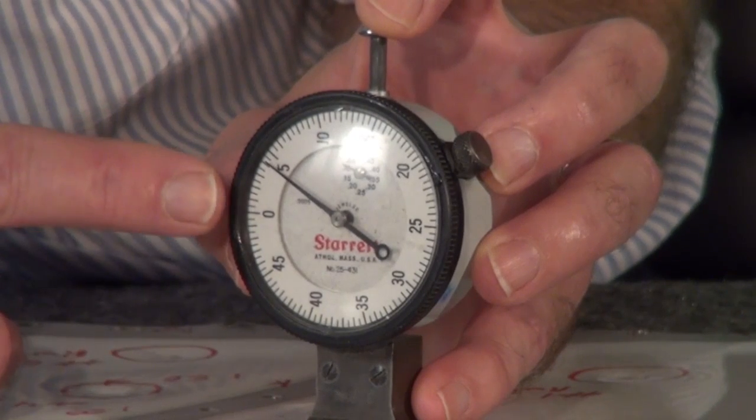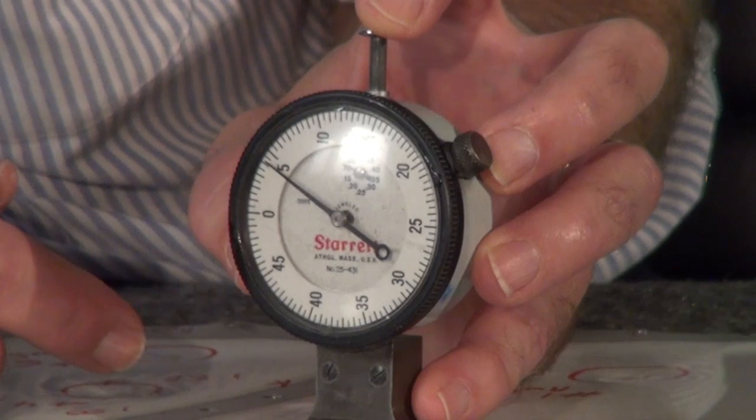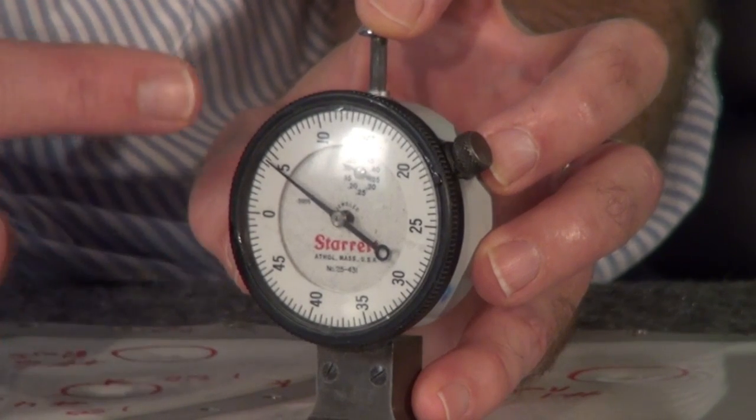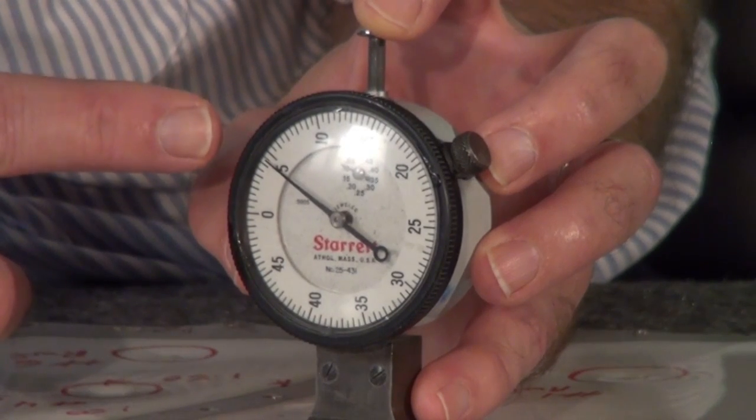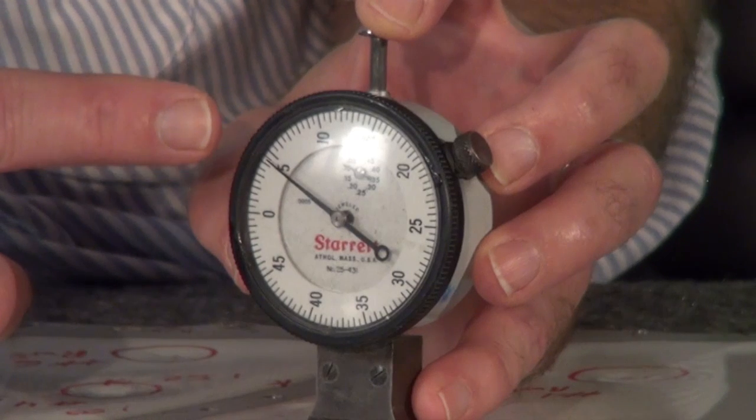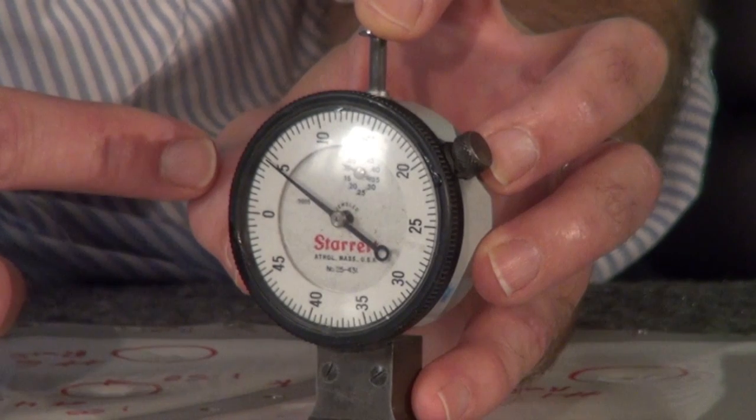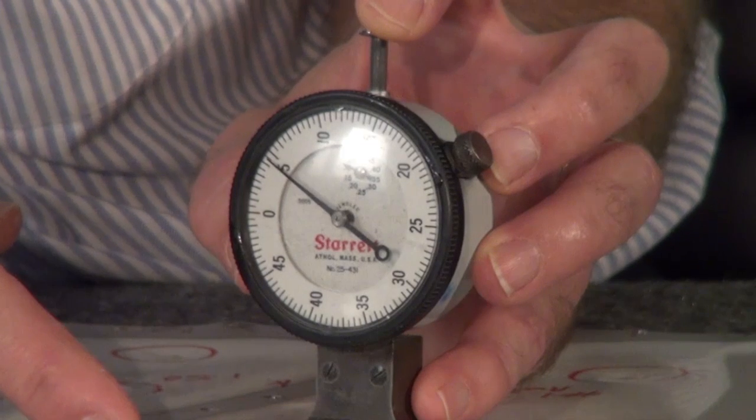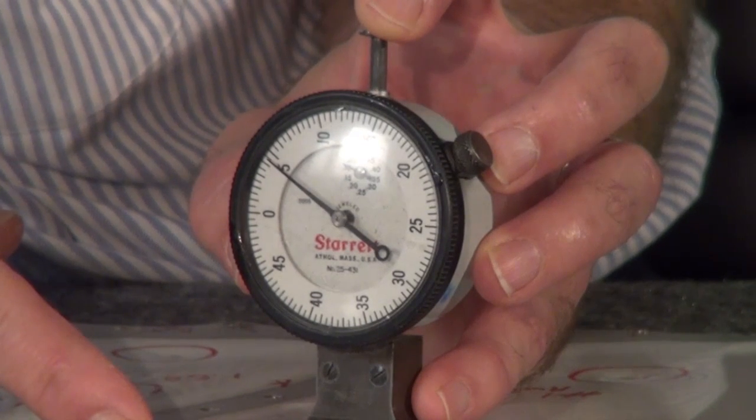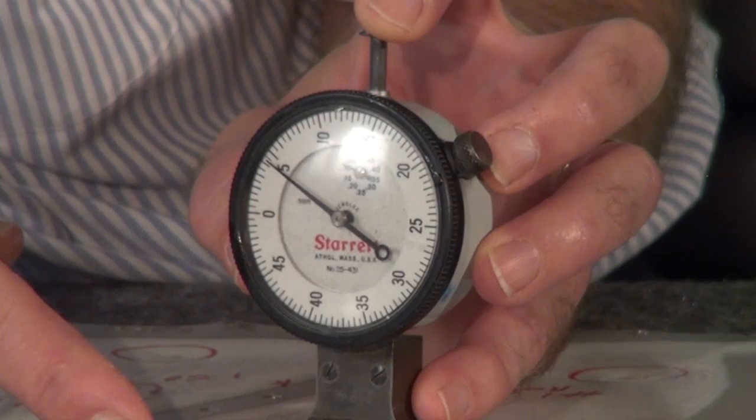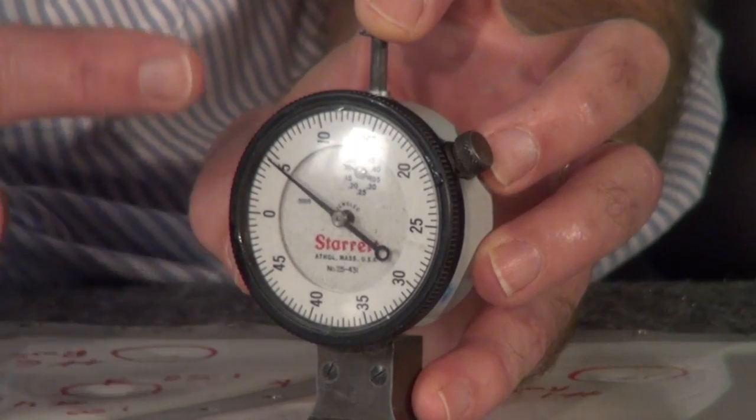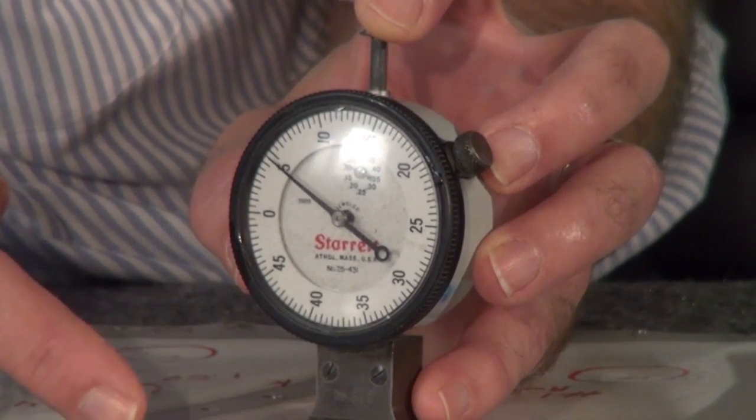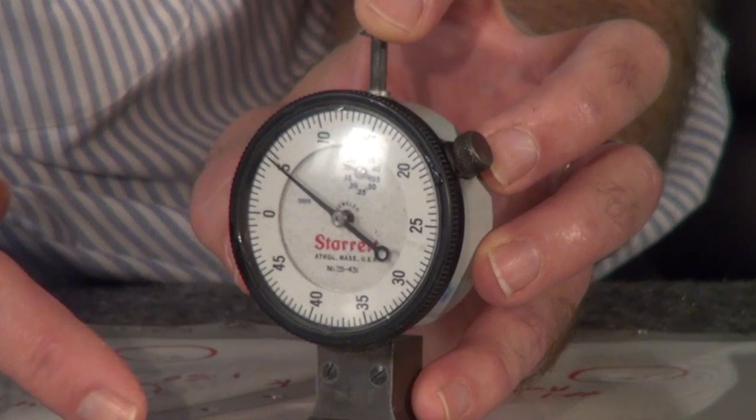now this dial, for every revolution, it's 50 thousandths. And you can see we're just about at the five mark, so we're right at 54 thousandths deep. And yet we'd recorded, with our digital calipers, the 26 thousandths. And so this is why this is definitely the preferred method in measuring skin dents.